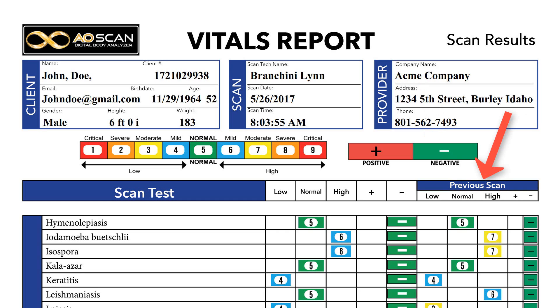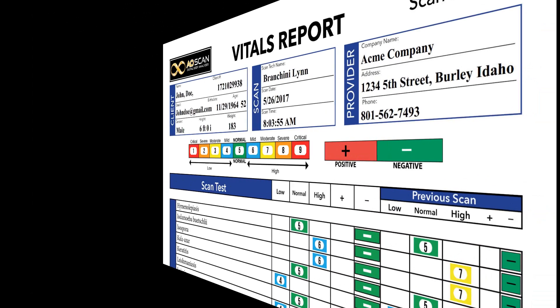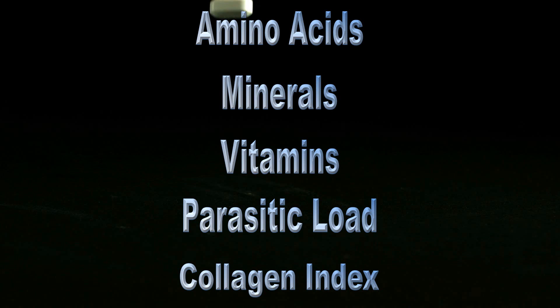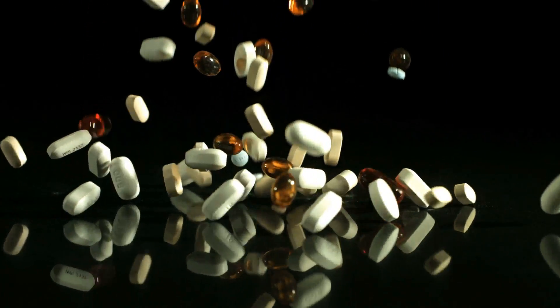There are two scans side by side. The previous scan was the original scan we did. The second scan shows what effect the frequency optimization had on the health challenges. When we do not see improvement, that is an area we would want to focus on. Using this report — specifically looking at amino acids, minerals, vitamins, parasitic load, and even the collagen index — will give you the information needed to identify which nutraceuticals are needed to help the body meet the current challenges and bring everything into balance.